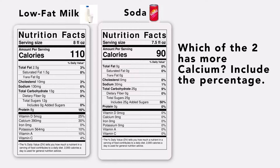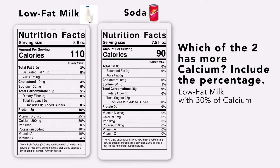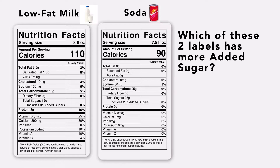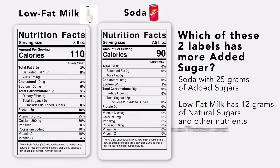If you chose low fat milk, you got it right — with 30% calcium. Now what about sugar? Which of these two labels has more added sugar, milk or soda? Soda, with 25 grams of added sugars. Milk has 12 grams of natural sugar as well as other nutrients like protein and vitamin D.